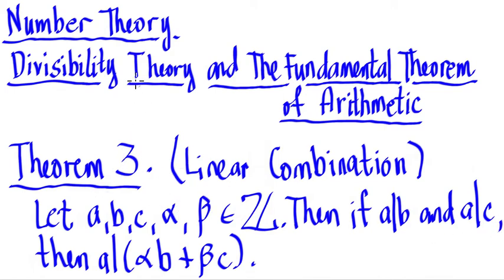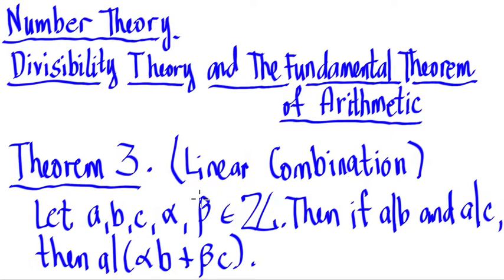Hi there folks! In this another video for number theory, we're still in the divisibility theory and the fundamental theorem of arithmetic. Right now on theorem 3 — we're going to name this theorem 3 because we're going to use this in the future. So this is kind of linked to linear combination. This states that something here is a linear combination. So let's state that formally.